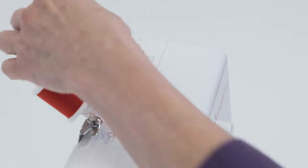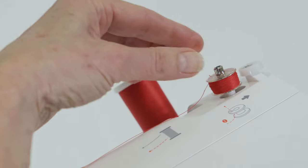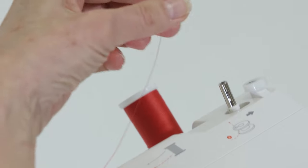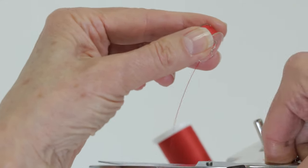When the bobbin is full, push it to the left, and then lift it off the bobbin winding spindle and cut the thread.